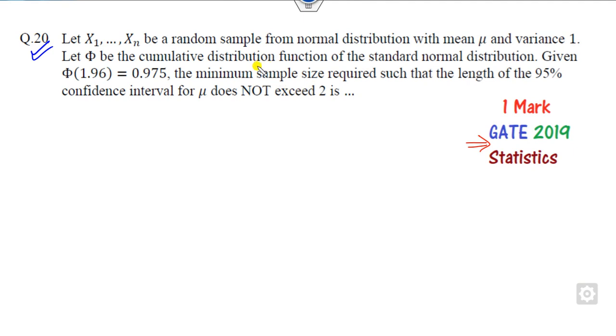The target is that you have to find the minimum sample size so that the mean does not exceed 2. The 95% confidence interval of mu, the confidence interval for mu does not exceed here. This is a given requirement for you and you have to find the sample size from here.